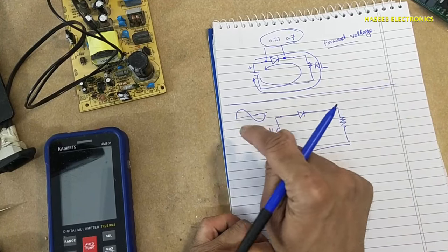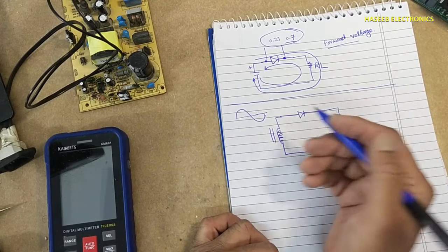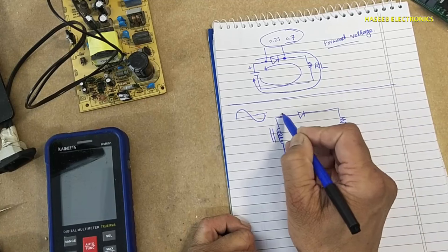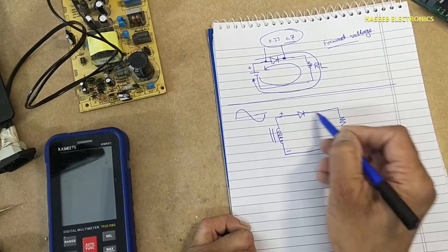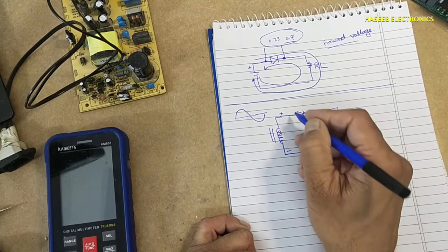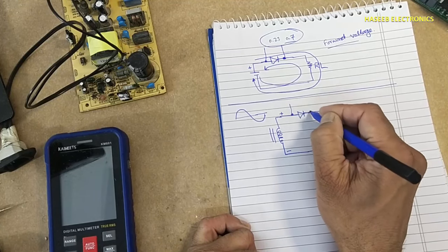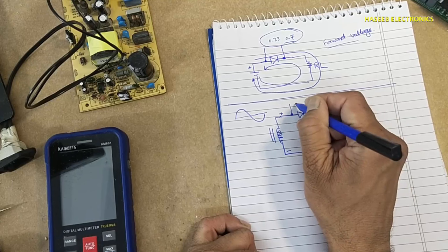One is called forward voltage. What is that condition? When this end is positive, this end is negative, the current will flow. In this situation it will drop 0.7 volts.